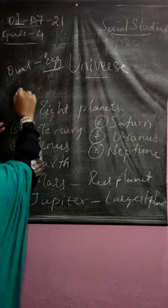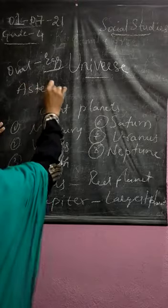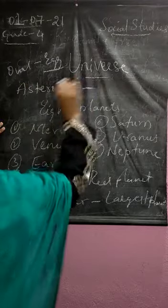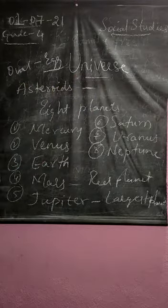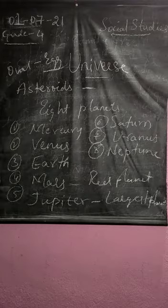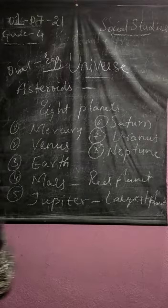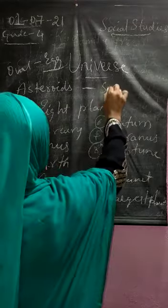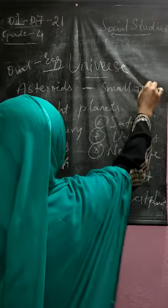Then coming to asteroids. What are asteroids? Asteroids are small rocky things that orbit the sun. They are the small rocky things.